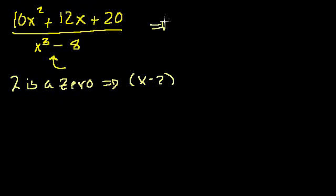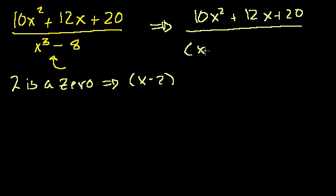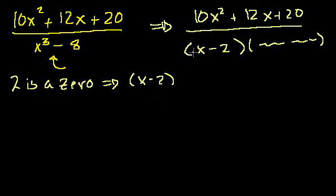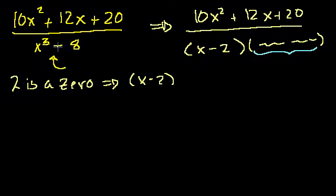So we can rewrite this as 10x squared plus 12x plus 20 over x minus 2 times something. If 2 makes the original expression 0, it should also make the factored expression 0, and putting x=2 into (x-2) gives 0, which makes the whole thing 0. To figure out the remaining factor, we use algebraic long division — we divide x minus 2 into x to the third minus 8 to get it.